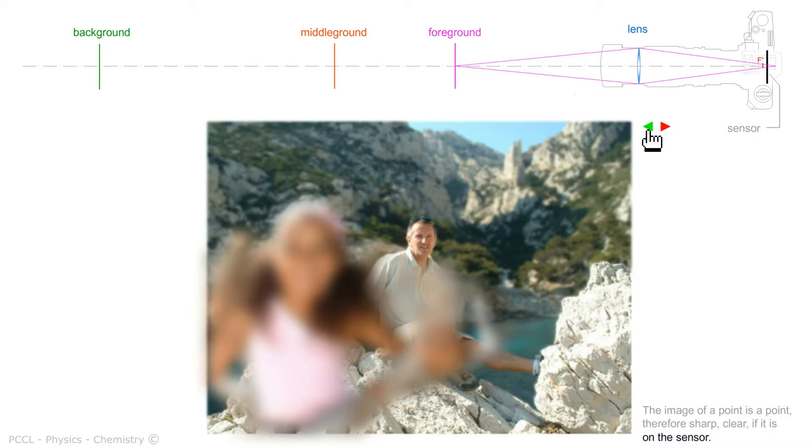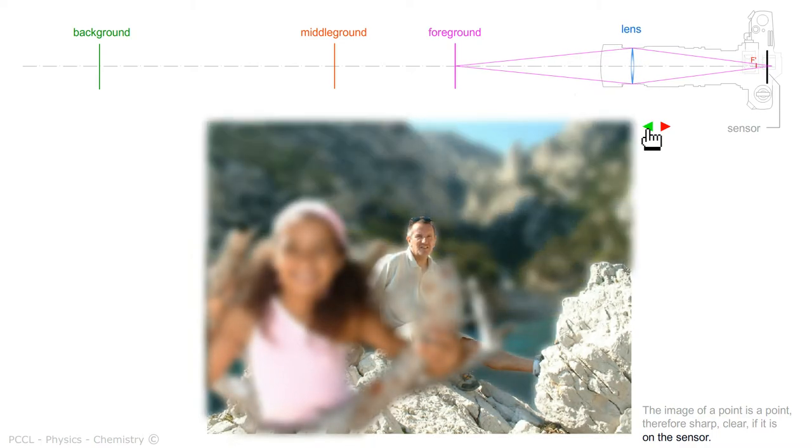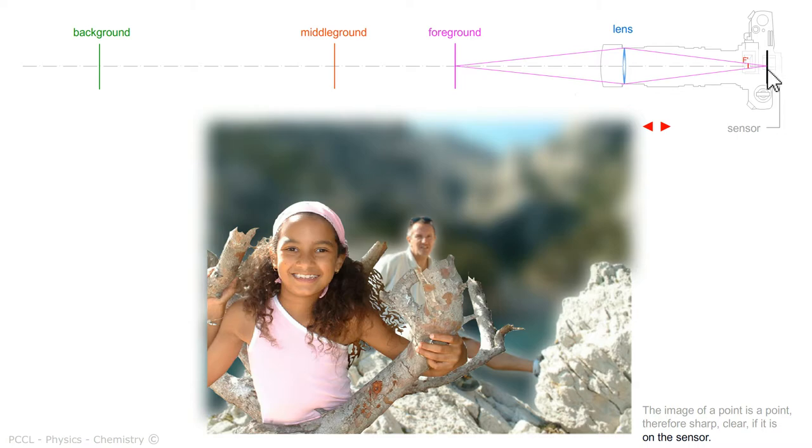Here, it's a little different from accommodation—we call that focusing. It is a question of moving the lens here to obtain a clear image on the sensor.